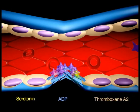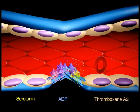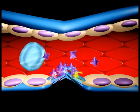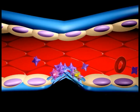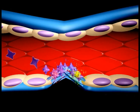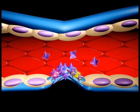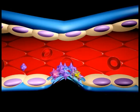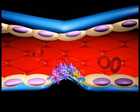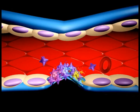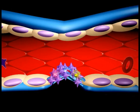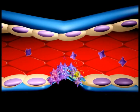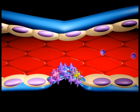And thromboxane A2. The ADP attracts more platelets to the area, and the thromboxane A2 promotes platelet aggregation, degranulation, and vasoconstriction. Thus, ADP and thromboxane A2 promote more platelet adhesion and therefore more ADP and thromboxane. The positive feedback promotes the formation of a platelet plug.